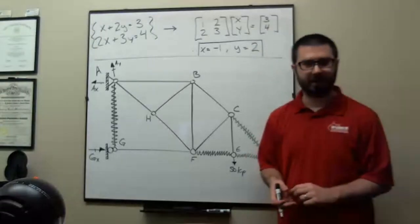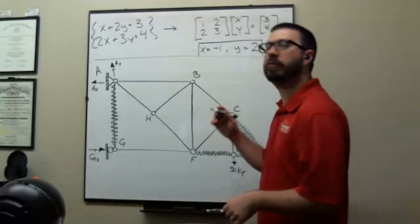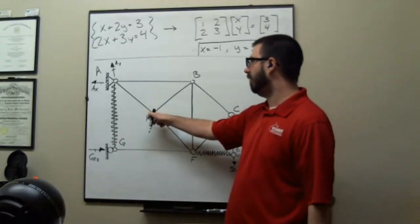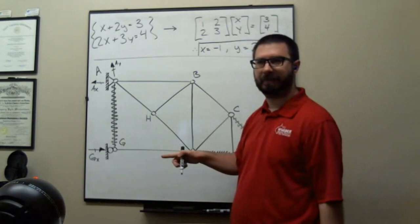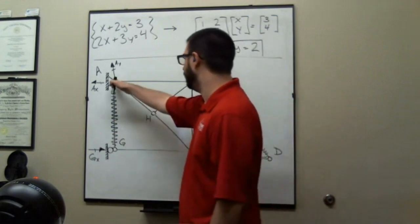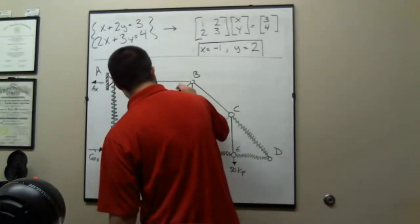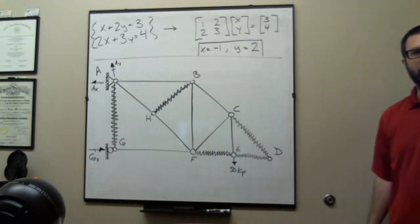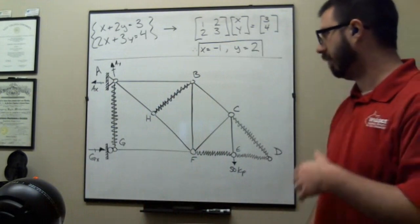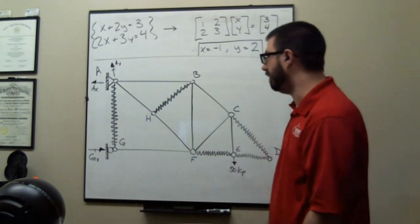Someone notes that BH might be a zero force member because AH and FH are collinear — on one line — and BH comes off of it. That's exactly right — applying rule three: three unknowns at joint H, AH and FH are parallel/collinear, so BH is a zero force member. All of this — no math, no computations.